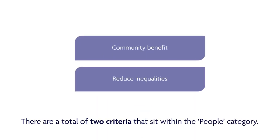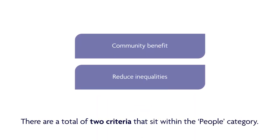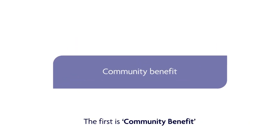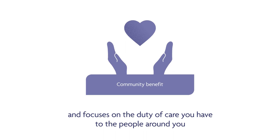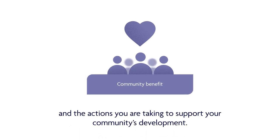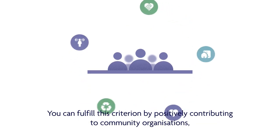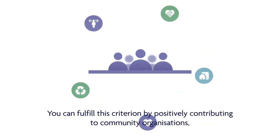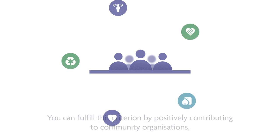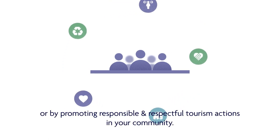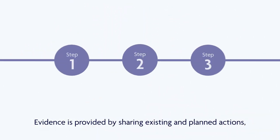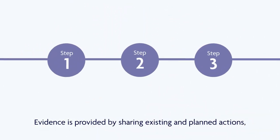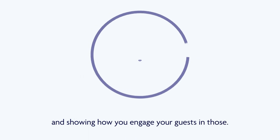There are a total of two criteria within the people category. The first is community benefit, which focuses on the duty of care you have to the people around you and the actions you are taking to support your community's development. You can fulfill this criterion by positively contributing to community organizations or by promoting responsible and respectful tourism actions in your community. Evidence is provided by sharing existing and planned actions and showing how you engage your guests in those.